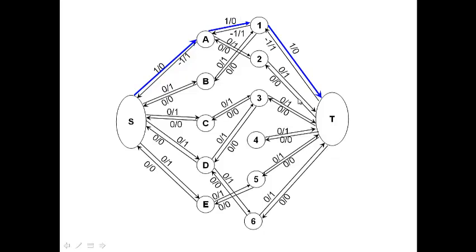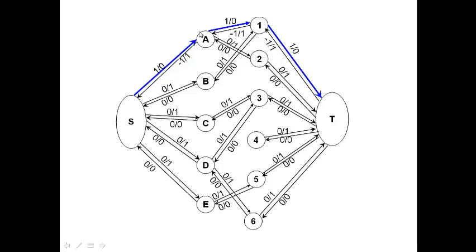For the second path, we go from s to b and try to get b connected to the sink. From s to b, then b to 1 — but now we make use of the back edge. From 1 we can send flow back to a using that back edge of capacity 1, then from a to 2, and from 2 to t.